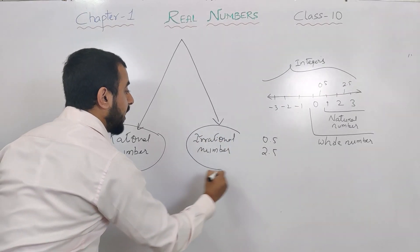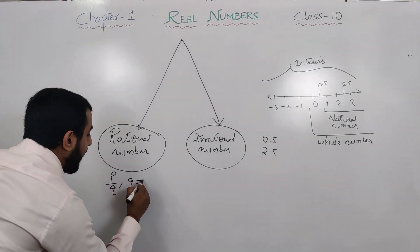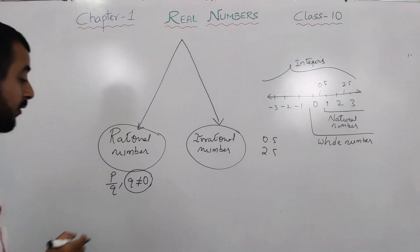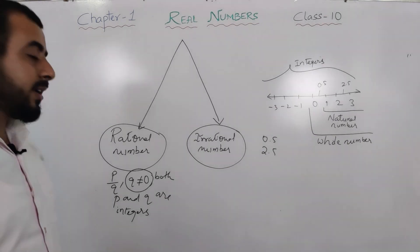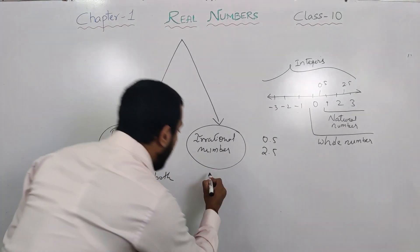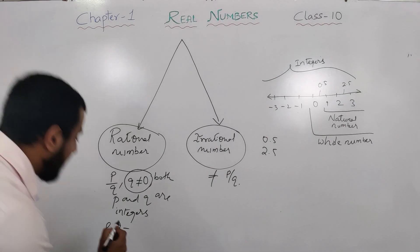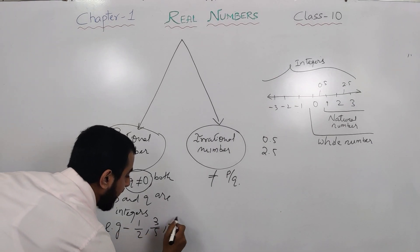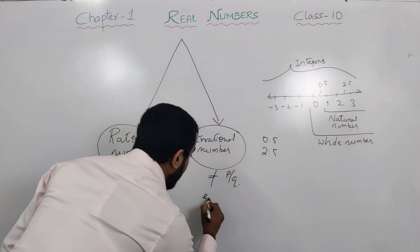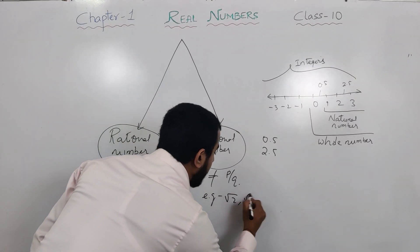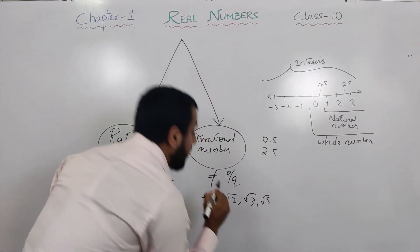Let us recall the definition of rational numbers and irrational numbers. A rational number is in the form of p by q, where q is not equal to zero — remember this condition, it is very important — and both p and q are integers. An irrational number is just the opposite: it is not in the form of p by q. Even pi is also called an irrational number.